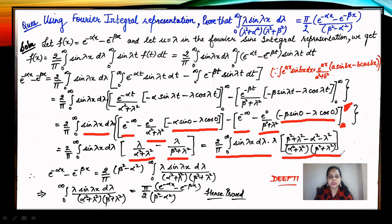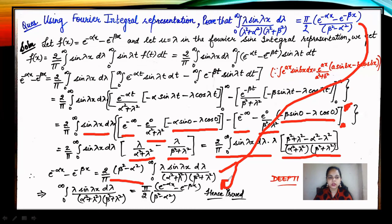Substituting back: f(x) = (2/π)(β²−α²) ∫₀^∞ λ sin(λx) / [(α²+λ²)(β²+λ²)] dλ. Rearranging, we obtain ∫₀^∞ λ sin(λx) / [(α²+λ²)(β²+λ²)] dλ = (π/2) · [e^(−αx) − e^(−βx)] / (β²−α²), which is the desired result.